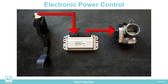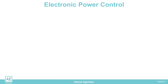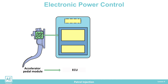Electronic power control comprises the accelerator pedal module with sensors, the engine control unit, and the throttle valve module. Electrical lines connect the various elements of the EPC system. The accelerator pedal module contains a pedal position sensor. The sensor measures the angular position of the pedal and sends a corresponding electrical signal to the ECU.